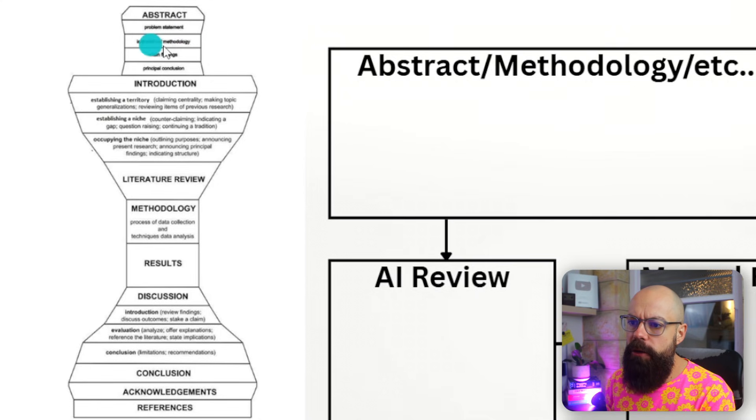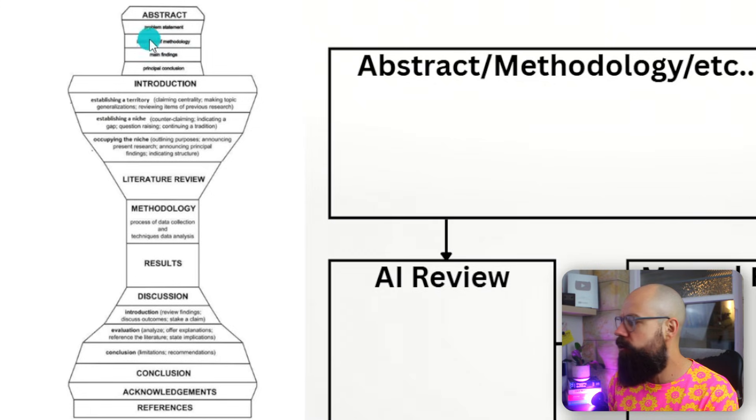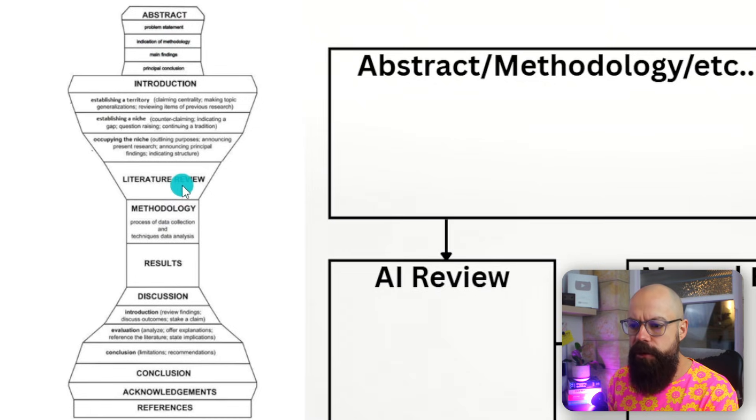Every single part of a peer-reviewed paper can now be augmented with AI tools. A typical peer-reviewed paper outline has your abstract, introduction, methodology, literature review, results, discussion, conclusion, acknowledgements — where you thank the people you don't really want to include in the author list — and then references at the bottom.